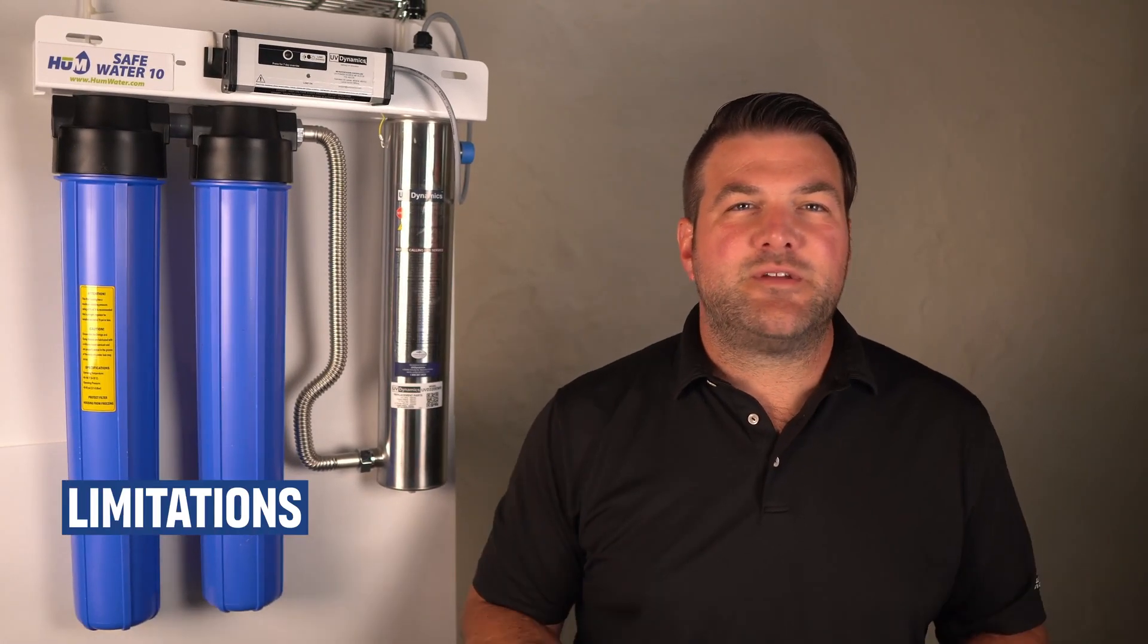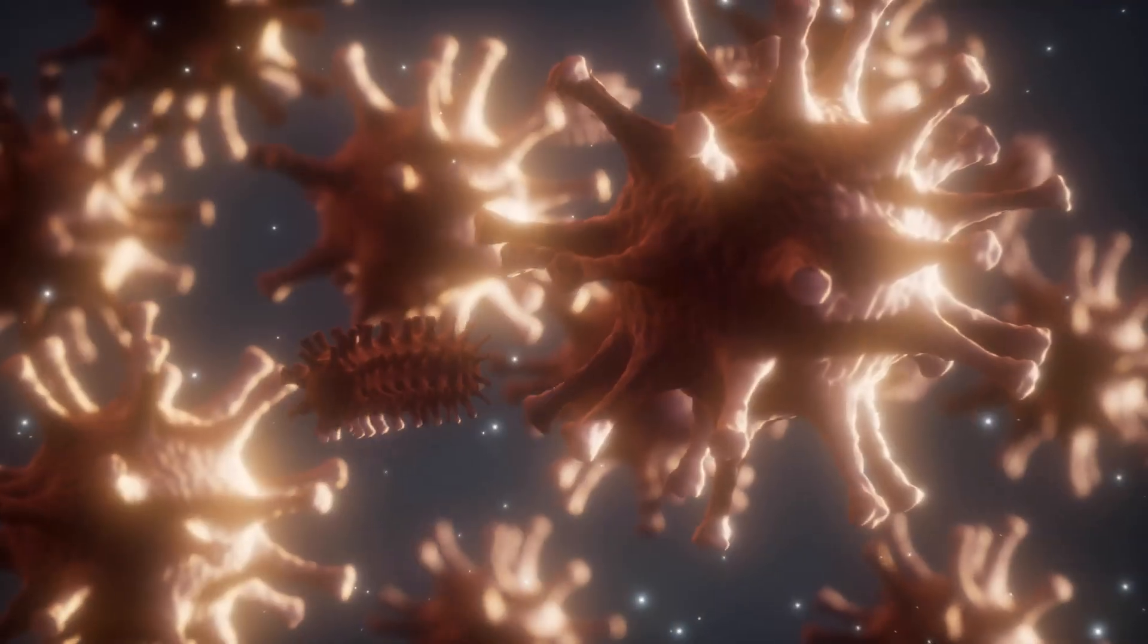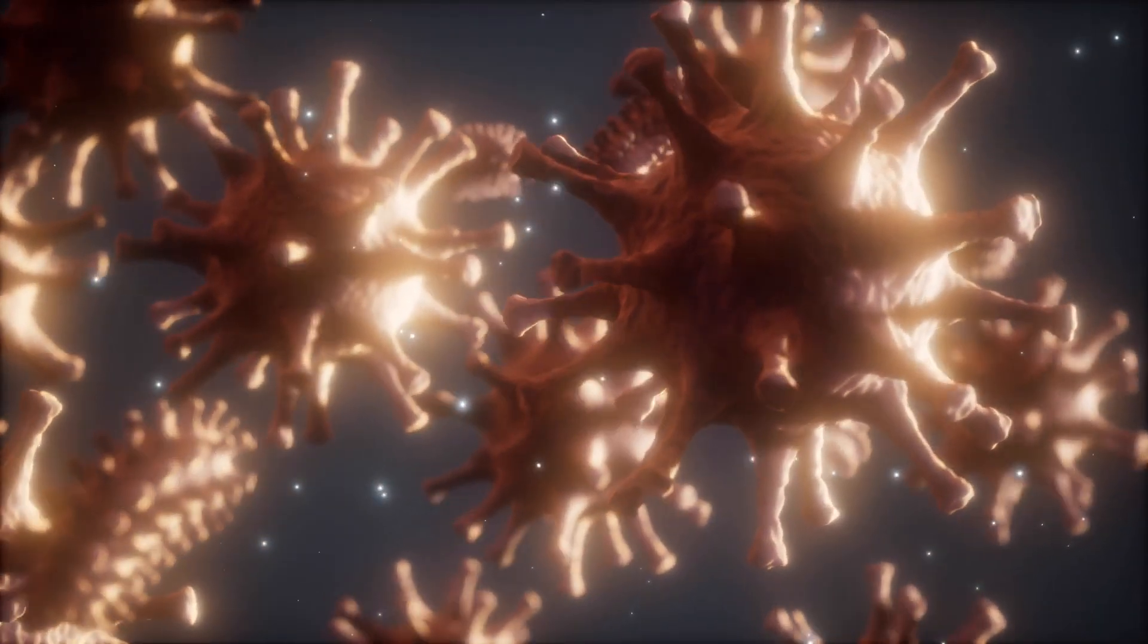One of the limitations of a UV system is that there's no chemical or heavy metal removal. UV systems only disinfect microorganisms. They don't remove chemical contaminants, heavy metals, or sediments. If you have those things in your water, you'll need additional water filtration equipment to remove them.